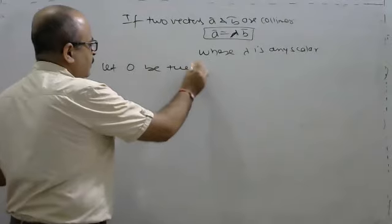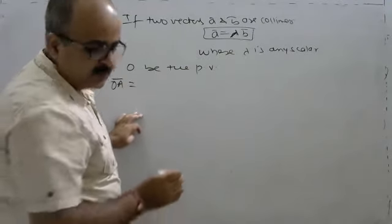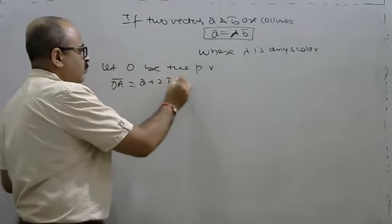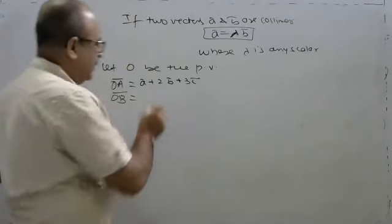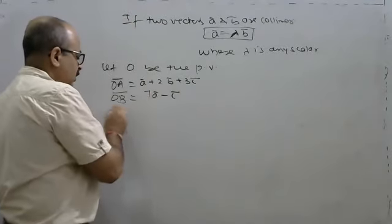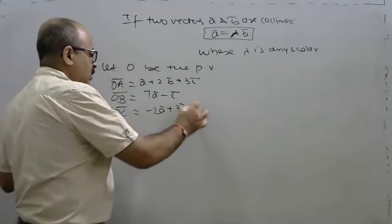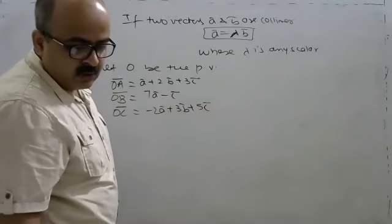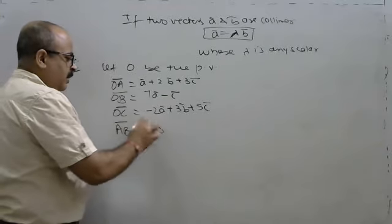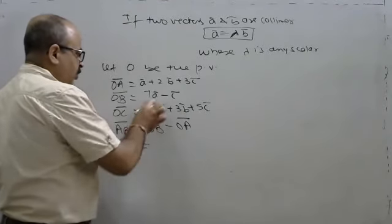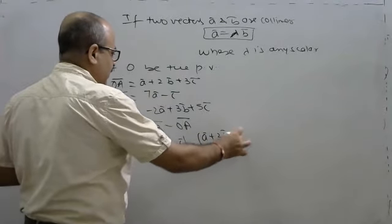Given OA position vector. Vector OA has components A plus 2B plus 3C. Vector OB has components — we will find vector AB. AB equals OB minus OA, which gives 7A minus C, then 6A minus 2B minus OC.